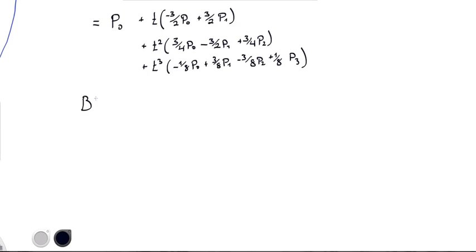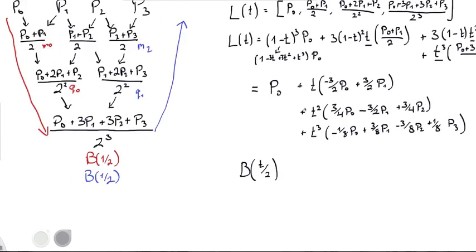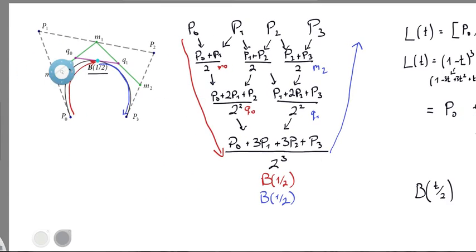We want to take B, and instead of just plugging in T, we want to plug in T over 2. So let's actually go back to this diagram over here and see why that is. So in this diagram over here, let's look at this curve.